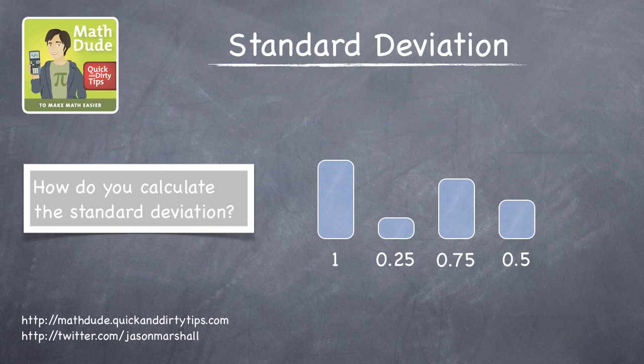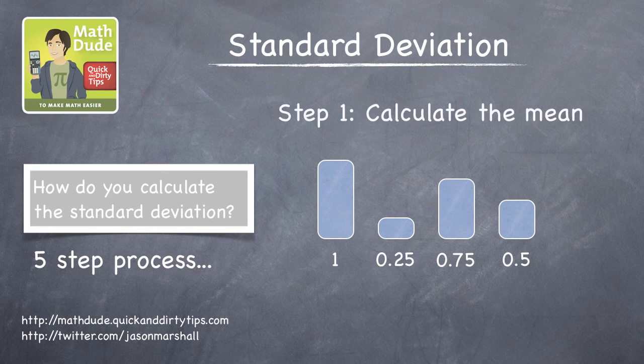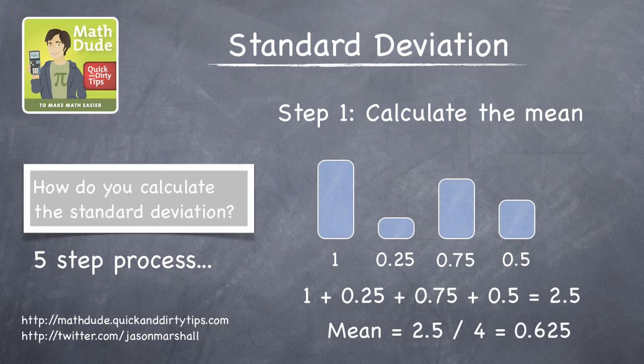Finding the standard deviation is a five-step process. Up first, you need to calculate the mean height of water, which in this case is 0.625.